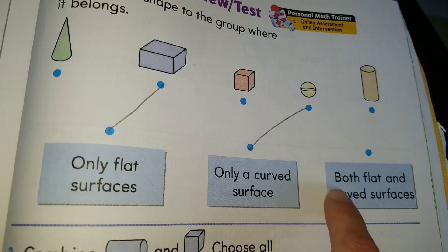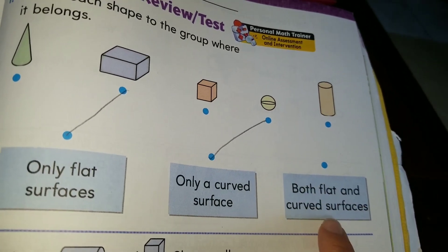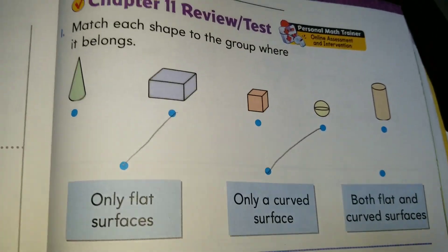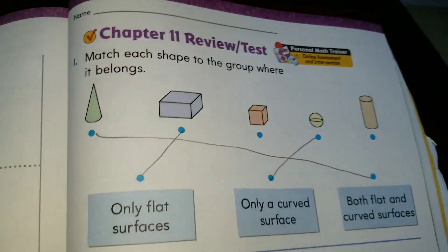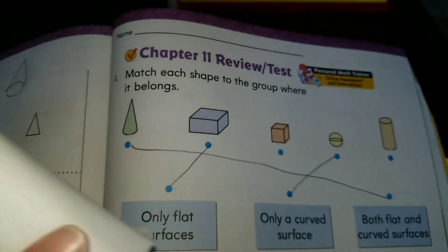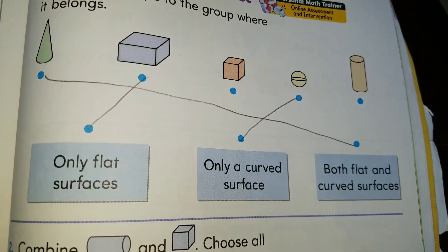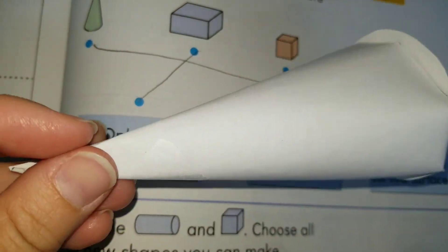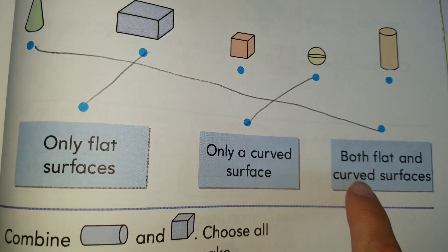The last one: 'both flat and curved surfaces.' The cone has both. As you can see, the cone has a flat surface at the bottom and a curved surface all the way around. Which other shape has both flat and curved? We already used the cone, the sphere, and the rectangular prism. We only have two left — which one also has both flat surfaces and curved surfaces?